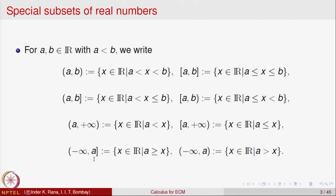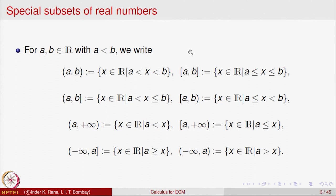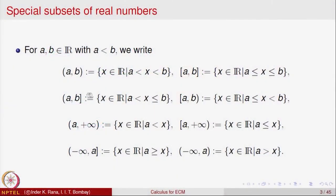Similarly, (-∞, a] denotes all real numbers x ≤ a, and (-∞, a) denotes all x strictly less than a. These are special types of sets called intervals — all subsets of the real line of this form. Keep in mind: a round bracket means strict inequality, a square bracket means less than or equal to. Also keep in mind that +∞ and -∞ are just symbols — they are not numbers.